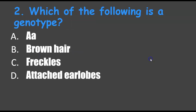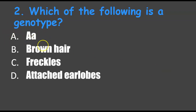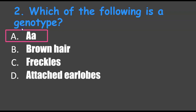Number two: which of the following is a genotype? Capital A lowercase a, brown hair, freckles, or attached earlobes? Look for the odd one out. Capital A lowercase a is the answer — it's a genotype showing alleles, the genes. It's not something you can physically see with your eyes.